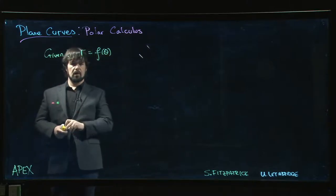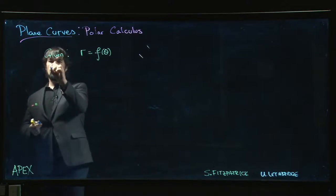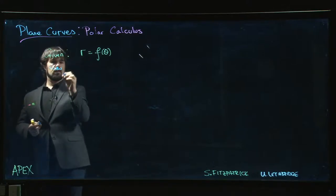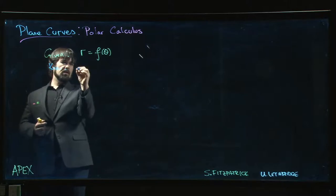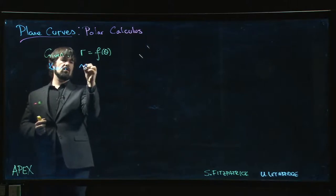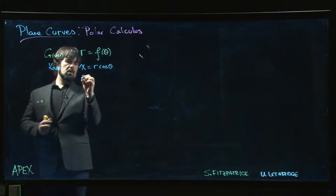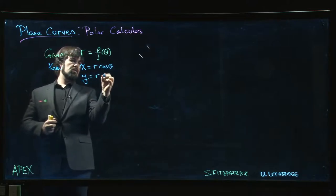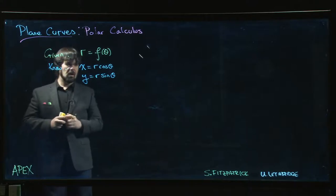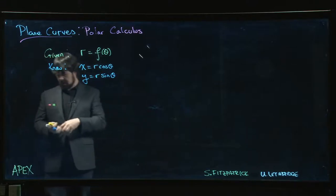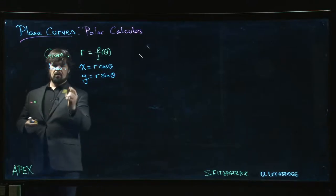We know about doing calculus for parametric curves. When we're converting between polar and rectangular, we have that x equals r times cosine theta, y equals r sine theta. So if we use theta as our parameter, then what we get is that x is equal to f of theta cosine theta.